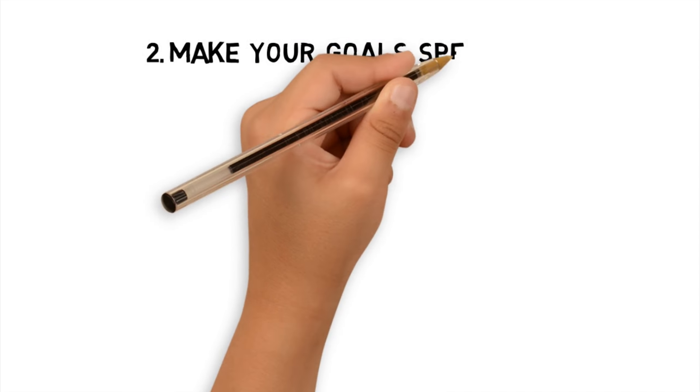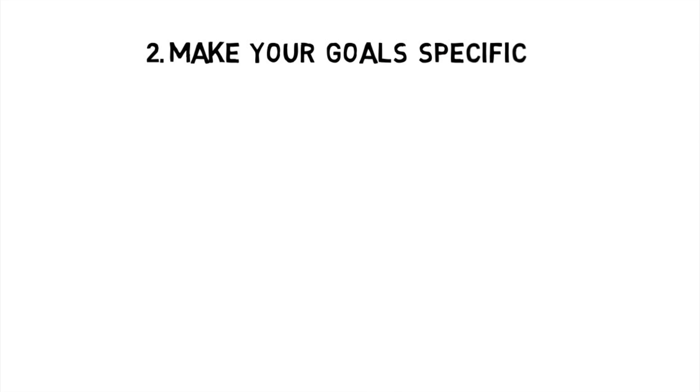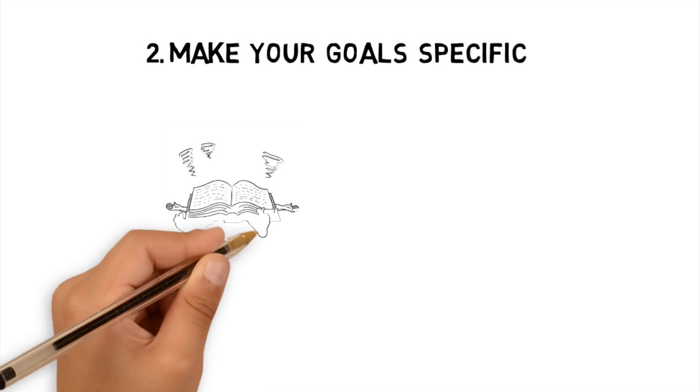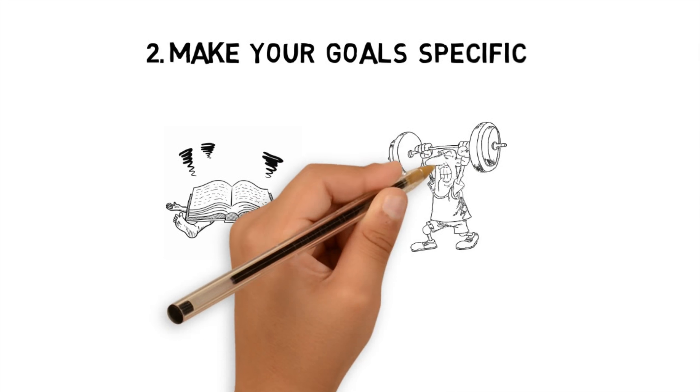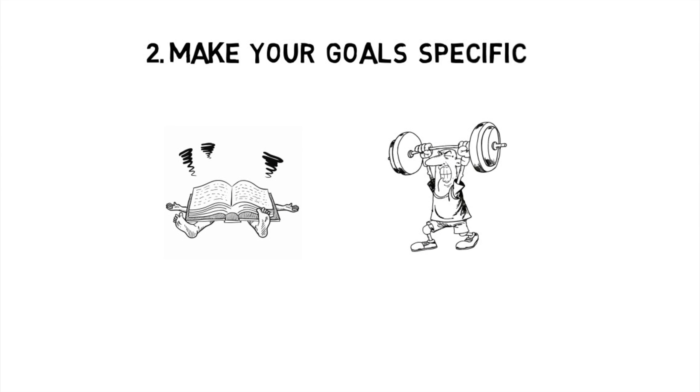The second step to actually accomplishing your goals is to make your goals specific. Don't be too general. Don't say things like this year I'm gonna work as hard as I can in school, or this month I'm gonna work out until I pass out in the gym. Those goals have no real meaning because they cannot be measured, and that means you are way less likely to follow through with them.